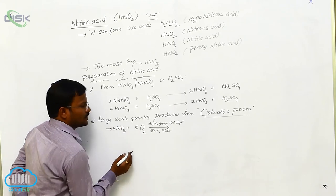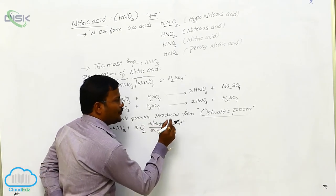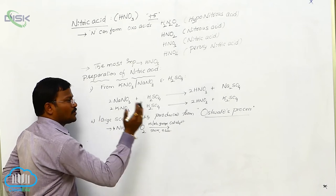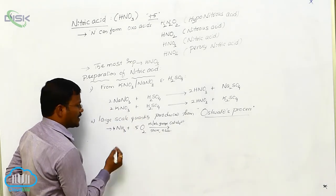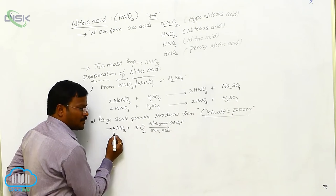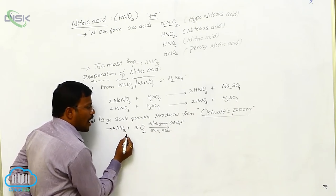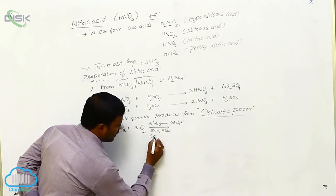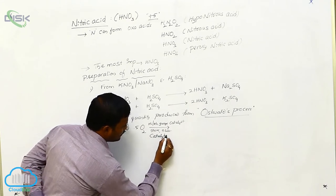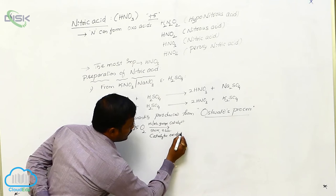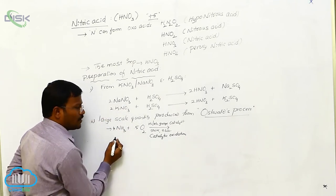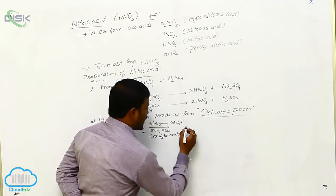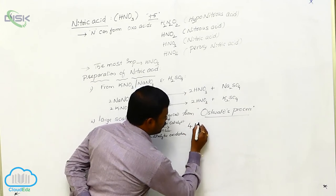In large-scale quantity, nitric acid is produced from Ostwald's method. So what is Ostwald's process for the preparation of nitric acid? In the first step, ammonia undergoes catalytic oxidation in the atmosphere, reacting with oxygen to produce nitrogen monoxide.